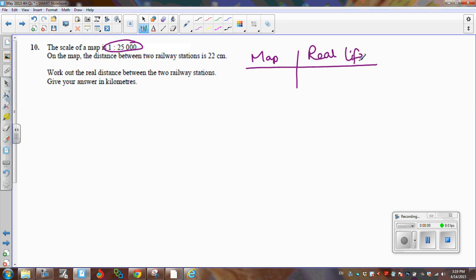All lengths on the map are 25,000 times smaller than everything in real life. Or, distances on the map, you have to multiply by 25,000 to get the real life distances. If this is in centimeters, this is in centimeters. If this is meters, this is meters.